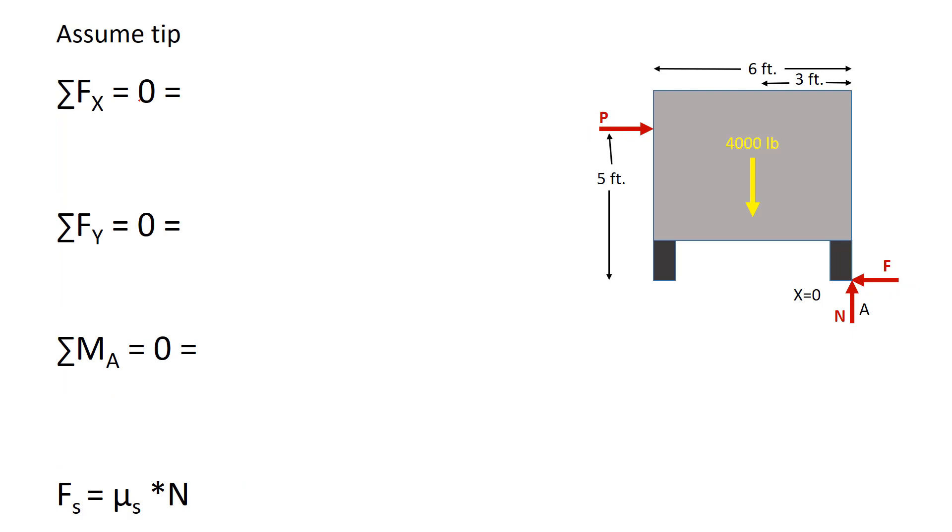Starting, sum of the forces in the x direction equals zero. I have P and I've got F, so I can say P is positive, P minus F equals zero. So I can say that the friction force is equal to that applied protester force. Sum of the forces in y equals zero. I have the weight of the vehicle, 4,000 pounds force. I have the reaction force here, minus 4,000 plus N equals zero. So I can say that N equals 4,000 pounds upward in the direction it's drawn. So far, so good.